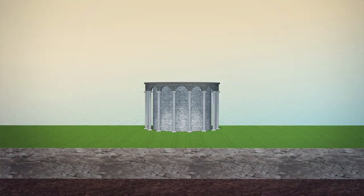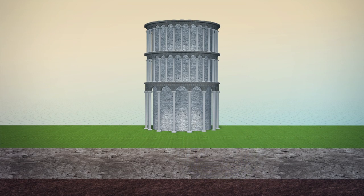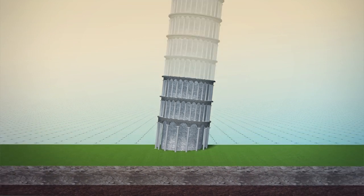The Tower of Pisa was constructed on a layer of clay and sand that was softer to the south and began to tilt by the time the third story was being built.